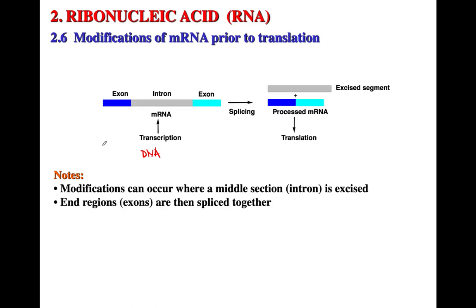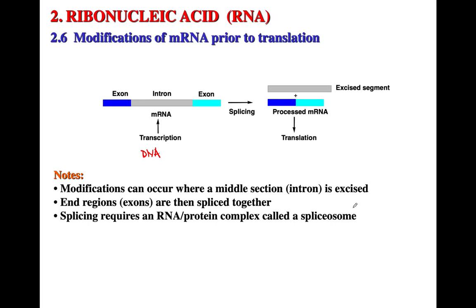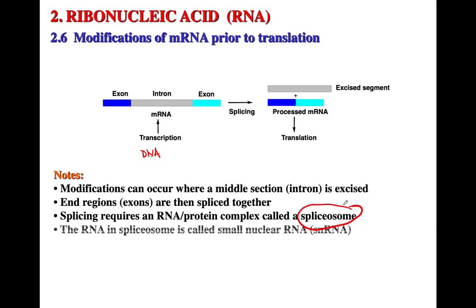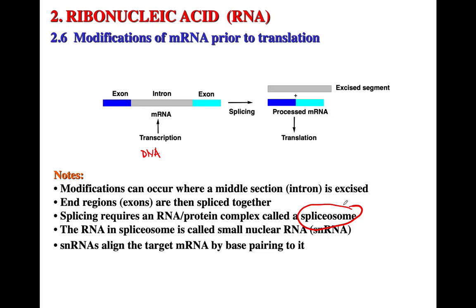The intron is the inside portion and the exons are the outside portions that are spliced together. Splicing requires a spliceosome, which is also of interest. The RNA in the spliceosome is called small nuclear RNA, and it aligns to the target mRNA by base pairing to it — that is how it performs the splicing.